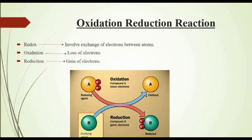In living organisms, redox reactions involve the loss and gain of hydrogen atoms. We know that a hydrogen atom contains one proton and one electron. It means that when a molecule loses a hydrogen atom, it actually loses an electron, and oxidation takes place. Similarly, when a molecule gains a hydrogen atom, it actually gains an electron, meaning reduction takes place.